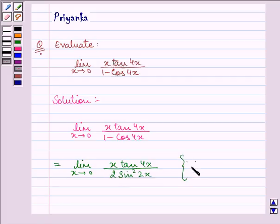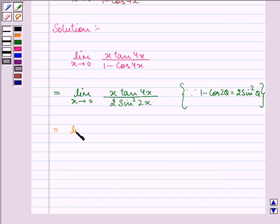Because 1 minus cos 2 theta is equal to 2 sin square theta. Okay. Now this is further equal to limit x approaches 0.